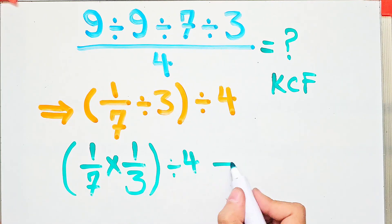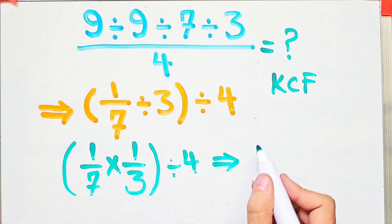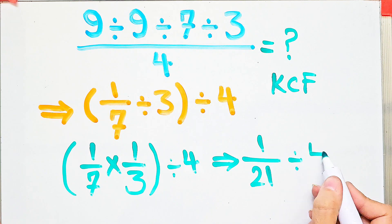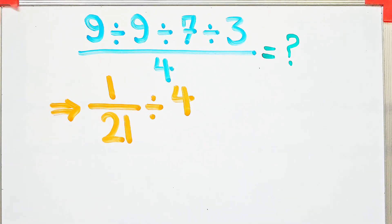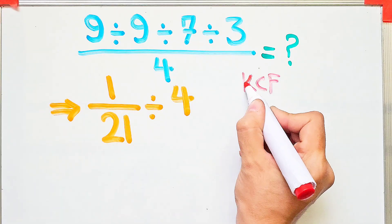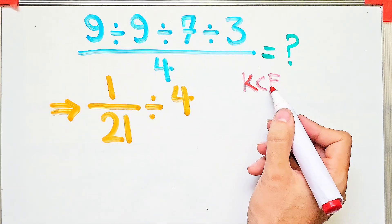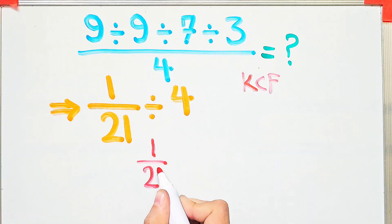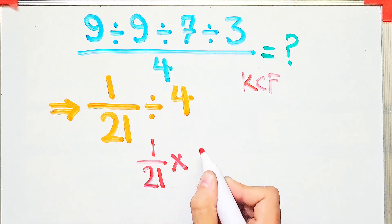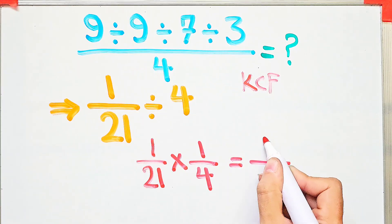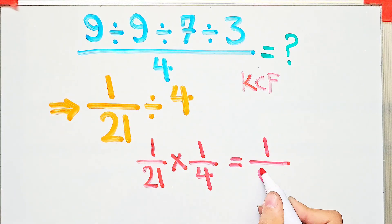Again, we simplify the parentheses. 1 over 7 times 1 over 3 equals 1 over 21. Now we have 1 over 21, divided by 4. Again, we use the KCF rule: we keep the first fraction as it is, then change the sign, then flip the second number. The final answer of this question equals 1 over 84.